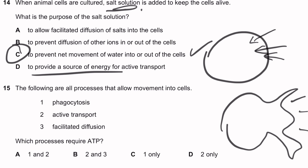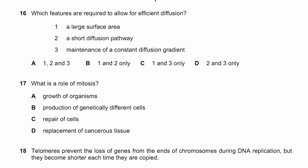Question fifteen. The following processes allow movement into cells: phagocytosis, active transport, and facilitated diffusion. Which processes require ATP? Phagocytosis and active transport both require ATP. Facilitated diffusion, as its name implies, is a passive process — it does not require energy or ATP. So the answer is phagocytosis and active transport only, which is letter A.